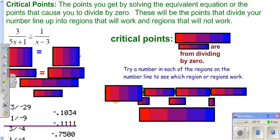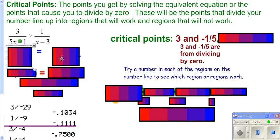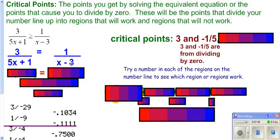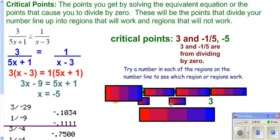For the last problem we do the same thing. The critical points from division by zero give us three here, and when you subtract and divide you get one-fifth. Now we treat the inequality as an equation and cross-multiply to find remaining critical points: distribute through, solve, and you get x = negative five. So negative five is your other critical point, and you put all of these on your number line.